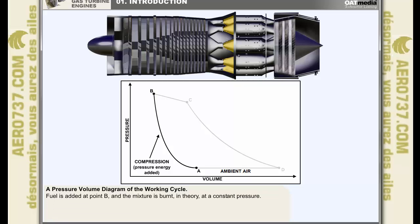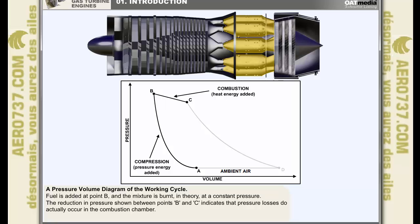Fuel is added in the combustion chambers, which is signified by point B, and the mixture is burnt in theory at a constant pressure. In fact, the reduction in pressure shown between points B and C indicates that pressure losses do actually occur in the combustion chamber. The drop in pressure is created by the need to produce the swirl and turbulence necessary for efficient combustion, and this causes a pressure drop throughout the combustion chamber length of between 3 to 6%. Notwithstanding this drop, a considerable increase in the volume of the air is generated within the combustion chamber.